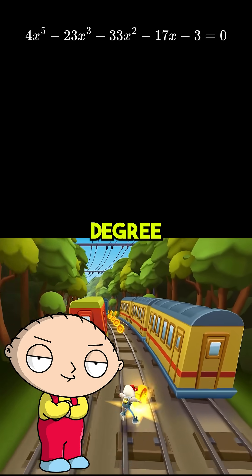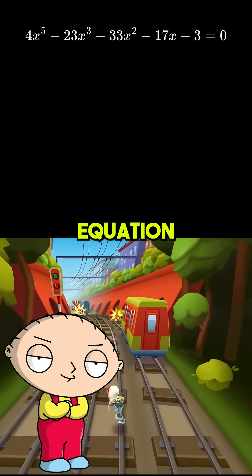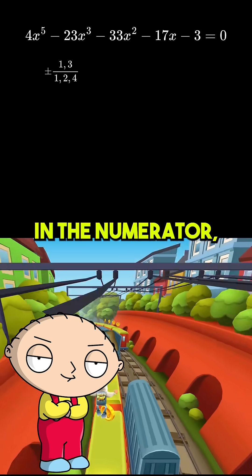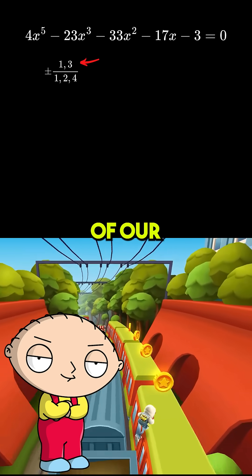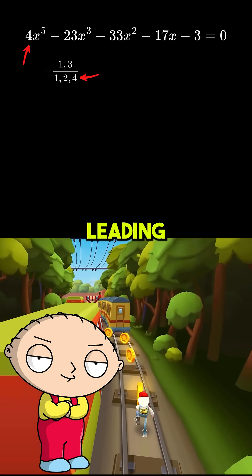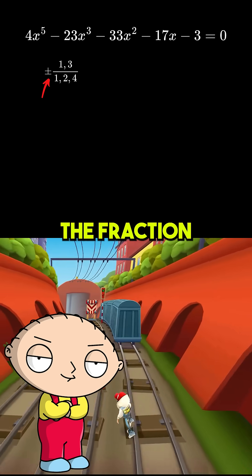Let's say we have this fifth-degree beast. Firstly, we need to find one of the roots of the equation. In order to find the possible roots, we make a fraction like this, and in the numerator, we put in the factors of our constant term. In the denominator, we put in the factors of the leading coefficient. Then, we put a plus or minus to the fraction.